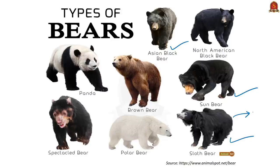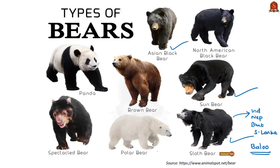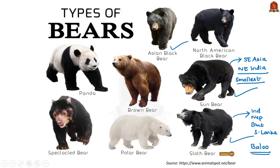An interesting fact about the sloth bear is that it is the inspiration for the beloved character Baloo in Rudyard Kipling's Jungle Book. The IUCN lists the sloth bear as Vulnerable. The sun bear is mostly distributed in Southeast Asia; in India, it occurs in the northeastern region, though it is not commonly found there. It is the smallest of the eight bear species found across the globe and is also listed as Vulnerable by the IUCN Red List.